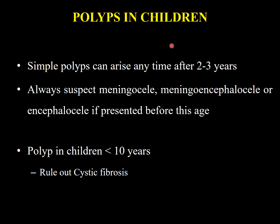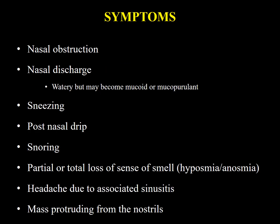In children, simple polyps can arise anytime after two to three years of age, but one should always suspect a connection with the brain — like meningocele, meningoencephalocele, or encephalocele — if there is any nasal mass below two years of age. Polyps in children less than ten years old: always suspect or rule out cystic fibrosis.